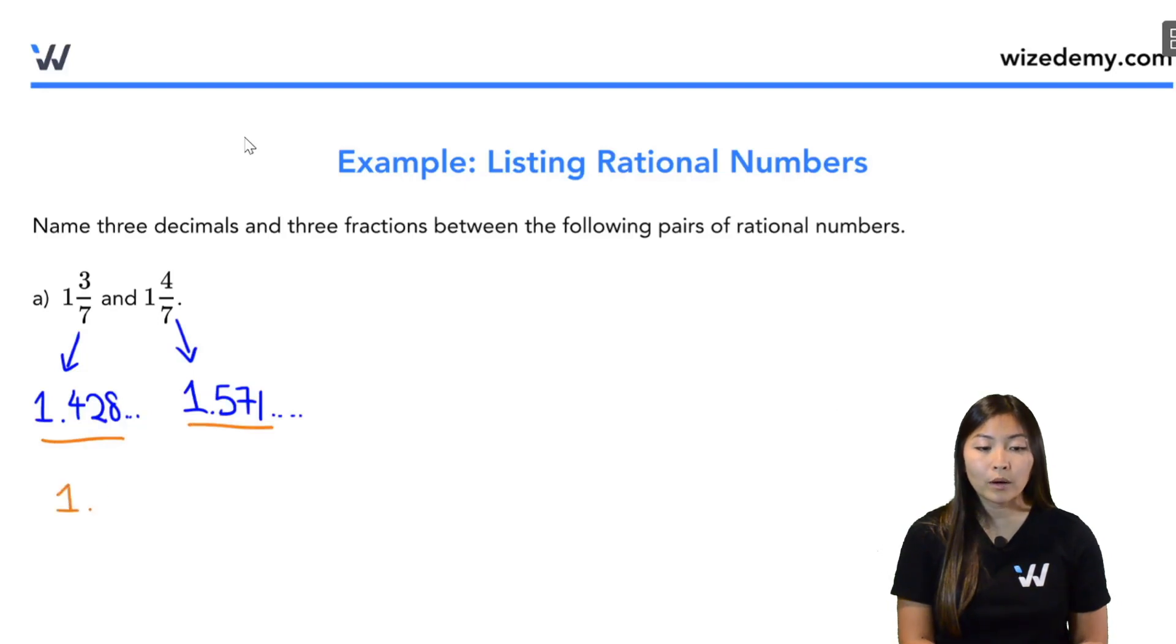So some options are 1.43 because that's bigger than 1.42 and it's smaller than 1.57. We also have 1.44, 1.45, and you have a ton of numbers to choose from. These are just three examples.